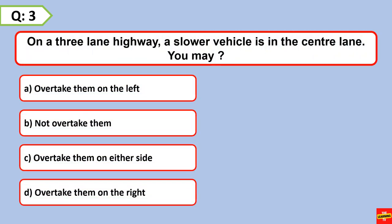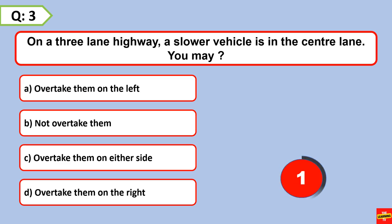On a three-lane highway, a slower vehicle is in the center lane. You may overtake them on the left.